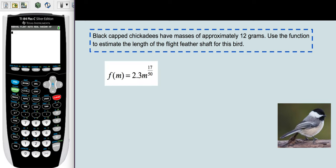We'll start with our function, f(m) = 2.3m^(17/50). We have the mass of the bird, 12 grams, and so that's the replacement for m. We have the input m.